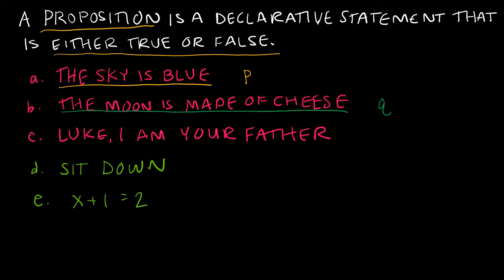The moon is made of cheese is considered a proposition because it is a declarative statement that is either true or false. Same thing with 'Luke, I am your father.' This is a declarative statement — either true or false. I'm going to say that one's false, and we'll say that's R.